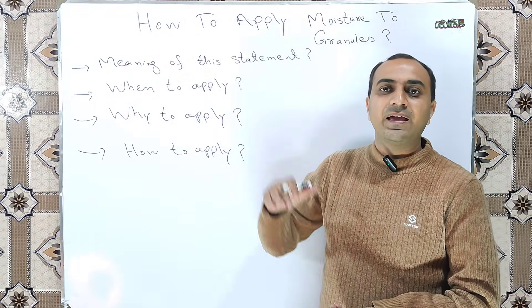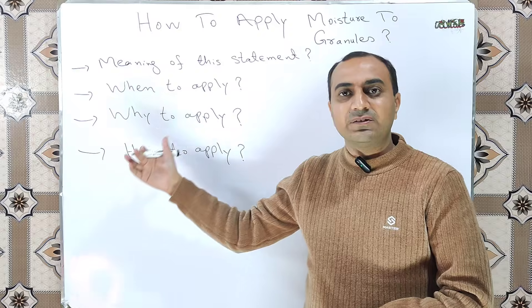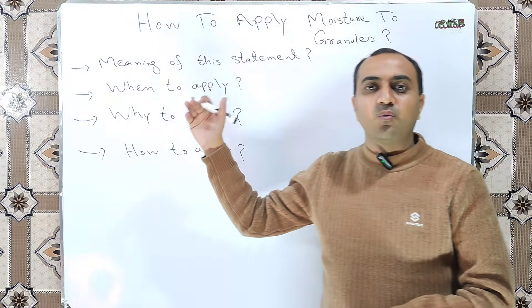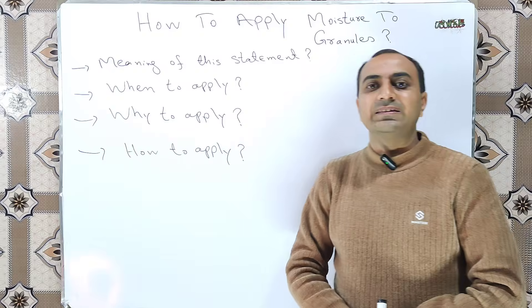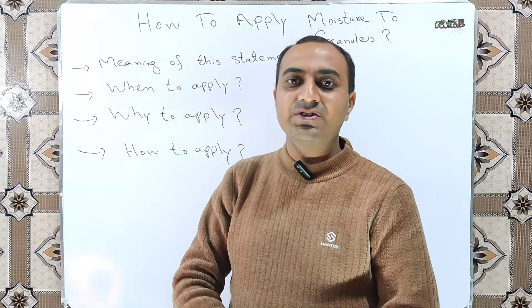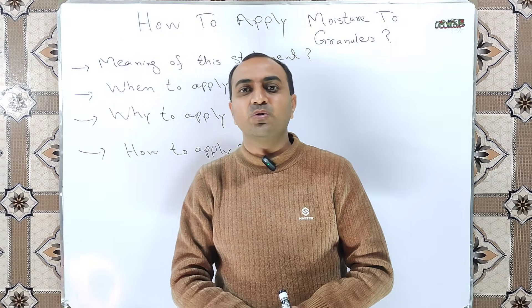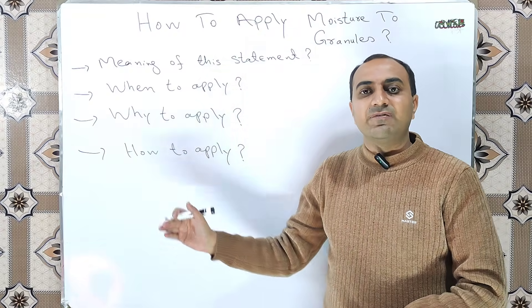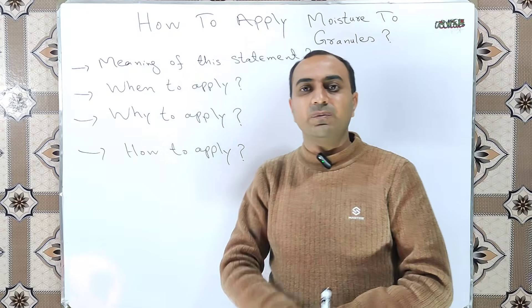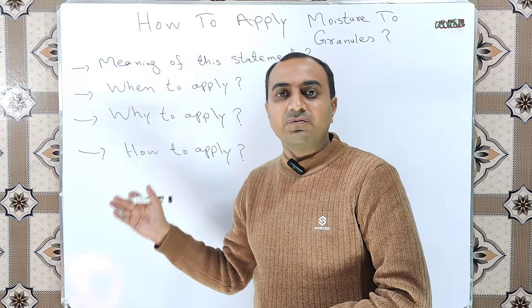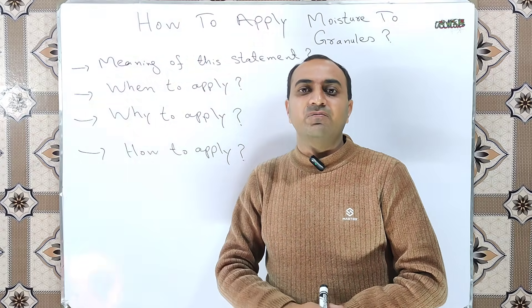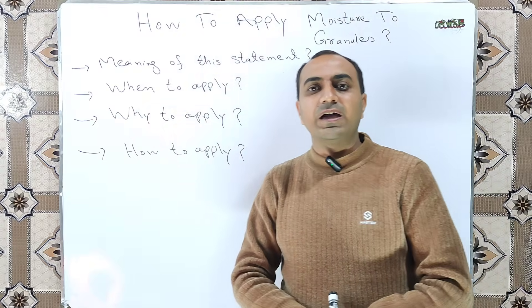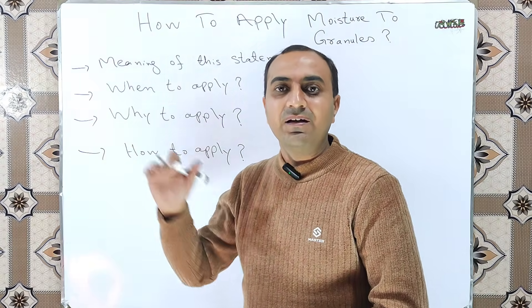One main thing to remember is that if you are not using this method in routine practice and you want to go towards the application of moisture, then you will have to generate a deviation for your batch because this behavior was unusual. You will create a deviation and then investigation will be performed and the root cause will be detected and will try to be eliminated the root cause while we need to apply the moisture.